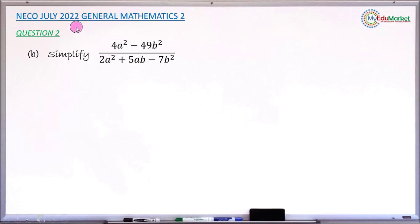This is a NECO July 2022 general mathematics paper 2. We are answering question number 2b and the question asks you to simplify this algebraic fraction. The numerator of the fraction is 4a² - 49b² over 2a² + 5ab - 7b².